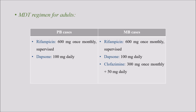Let us learn about the MDT regimen for adults. For paucibacillary cases, two drugs are given: rifampicin and dapsone. Rifampicin is given 600 mg once monthly under supervision, whereas dapsone is given 100 mg on a daily basis. For multi-bacillary cases, three drugs are given: rifampicin, dapsone, and clofazimine. The doses of rifampicin and dapsone are the same as in paucibacillary cases.